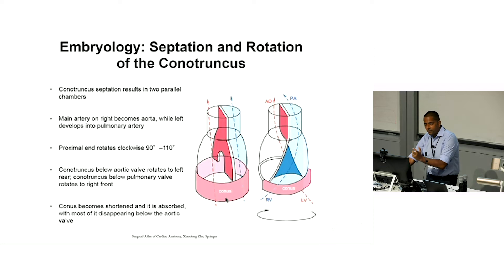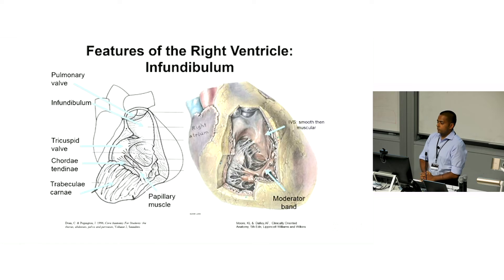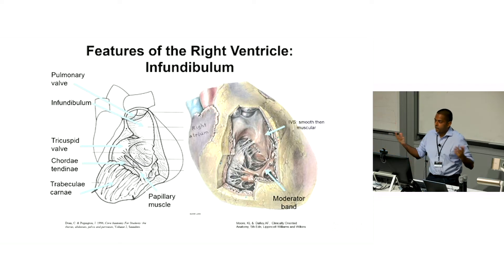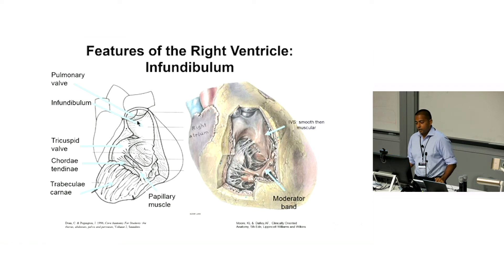At the same time as this clockwise rotation, the conus will resorb — but not equally between the left ventricle and the right ventricle. The conus resorbs more below the aortic valve and only resorbs a little bit in the right ventricle. So a key feature of the right ventricle is that it has an infundibulum, because the conus didn't resorb as much as it did in the left ventricle. When asked what makes a right ventricle a right ventricle, we say it's thinner, has more trabeculations, and has the most apically displaced valve — the tricuspid valve. But the correct answer is that it has an infundibulum.